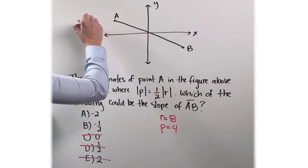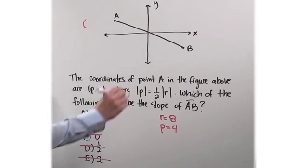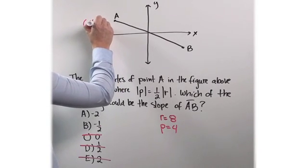Now, if I were to write this up in its actual coordinates, since it's in this quadrant, my x value is negative. So it would be negative 4, 8.